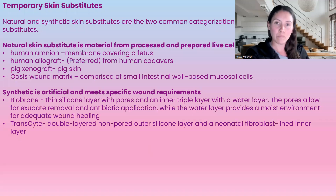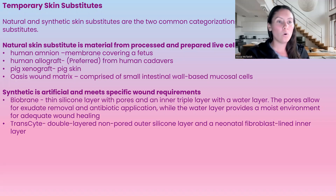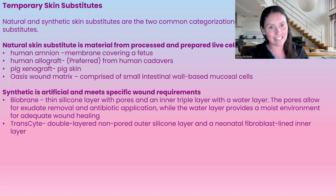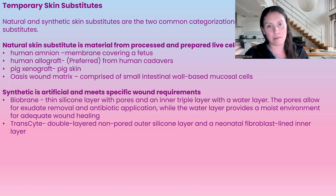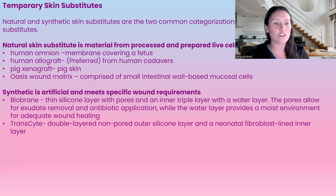For temporary skin substitutes, you can have either natural or synthetic skin. Natural skin substitutes are prepared and processed from live cells. Examples include human amnion — the membrane that covers the fetus, prepared from those cells — human allograft, which is the preferred skin substitute and is made from human cadavers, as well as pig skin and oasis wound matrix.